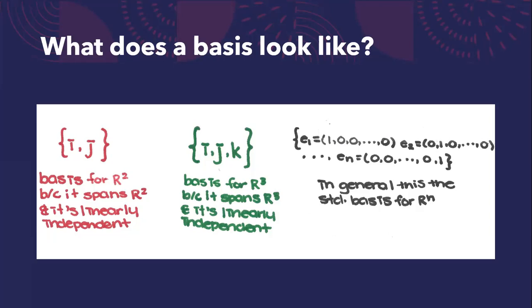Similarly, {i, j, k} is called the standard basis for R³ because it spans R³ and is linearly independent.